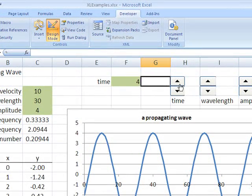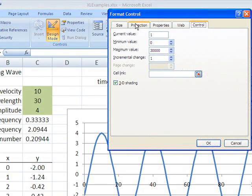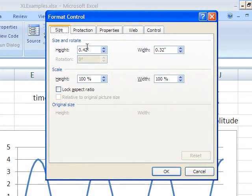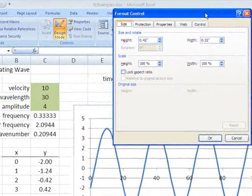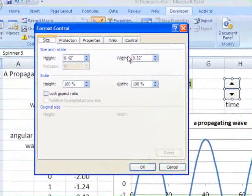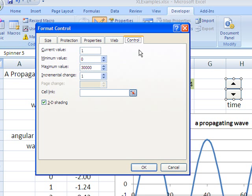So what we need to do is come over here, right click on the control and go to format control. You have a number of different tabs here. You can set the size and that would be a good way to make sure that they're all exactly the same size by typing in the same widths here. I'm not going to bother with that right now. Instead I'm just going to go straight to the meat and that is the control tab.